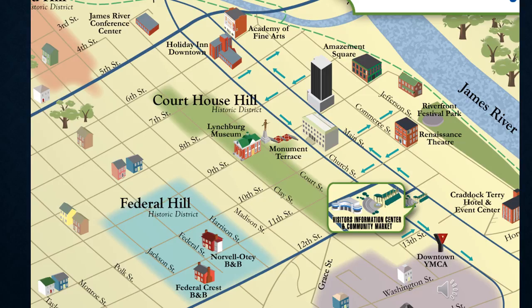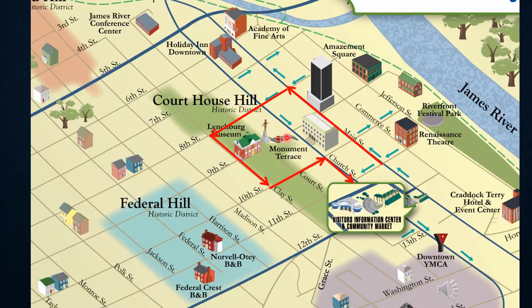You've actually added vectors before in your life but maybe didn't know it. This is a cartoonish map of downtown Lynchburg taken from the visitor center. Say I started to go for a walk there and I walk three blocks up Main Street, then take a left on 8th Street and go three blocks there. We could see each of these as a displacement — a displacement for three blocks in one direction, a displacement for three blocks along 8th Street, and then two blocks and one more block. Each of these is a vector: it has some length and a direction.